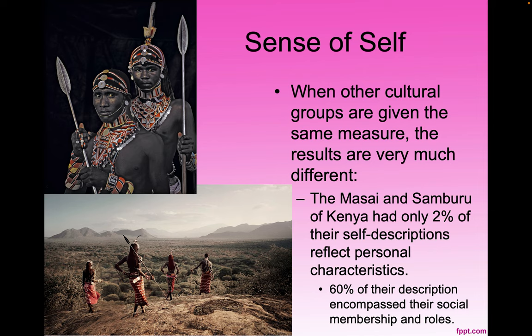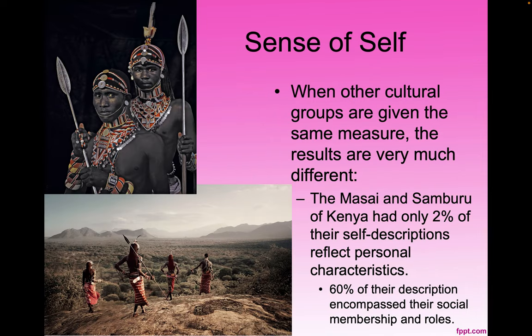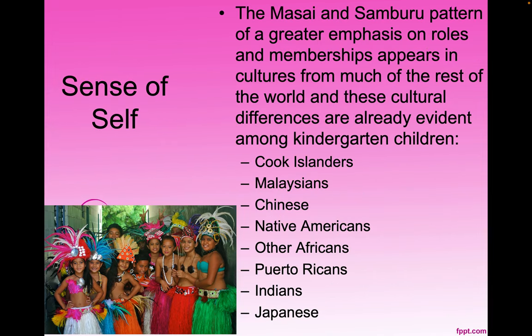When other cultural groups were given the same measure, the results were very different. The Maasai and the Samburu of Kenya had only 2% of their self-descriptions reflect personal characteristics. 60% of their description encompassed their social membership and their roles in that society, whereas Westerners not so much.